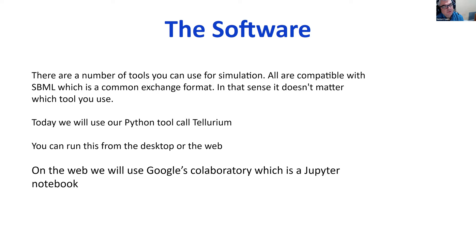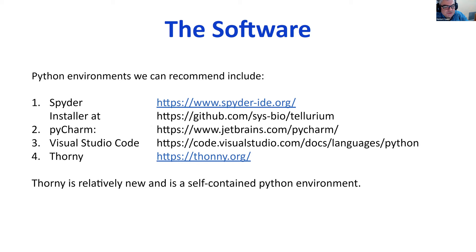For today we're going to use something called Google Colab — Google's interface to Python on the web — which uses something called a Jupyter notebook. This means we don't have to fiddle much with installing stuff. You all have different computers — Windows, Mac, Linux — and it takes a bit more effort to install Tellurium locally. To avoid any issues, especially since we've only got six hours, we're going to run everything from Colab.